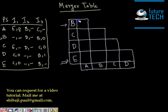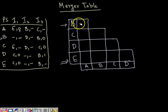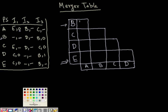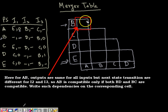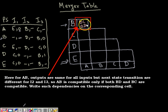So for the cell corresponding to A-B: the outputs are compatible for all inputs, but the next states differ. A-B is compatible only if B-D is compatible and B-C is compatible. We write the dependency pair B-D and B-C, meaning A-B is compatible only if both B-C and B-D are compatible.